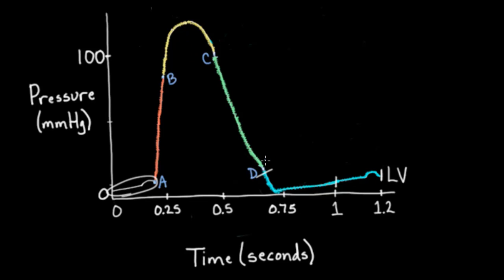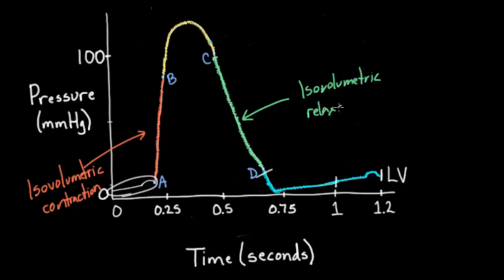And we know that going from A to B, this we call the isovolumetric contraction, meaning the volume in the heart stays the same while there's a contraction going on there. And on the other side, in green, we have isovolumetric relaxation. So kind of the same idea that volume is not changing during these times. And because of that, I think that's kind of an easy place to start our graph.